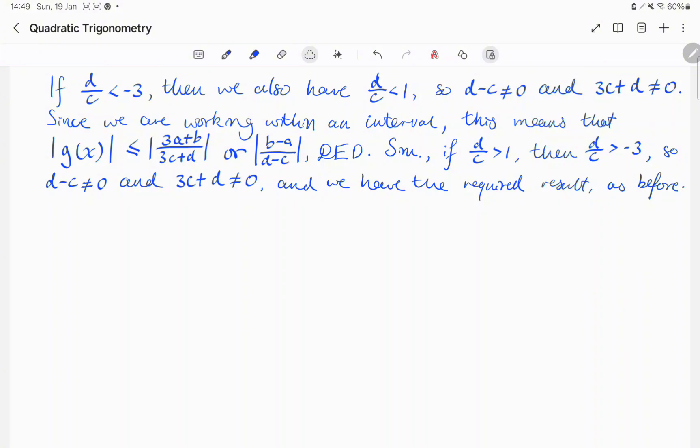Similarly, if d over c is greater than 1, then d over c is also greater than negative 3. So, d minus c is not equal to 0, and 3c plus d is also not equal to 0, and we have the required result as before.